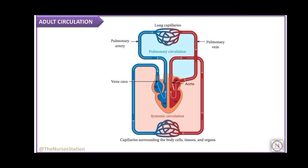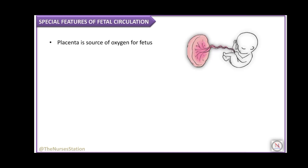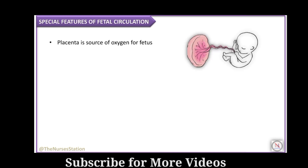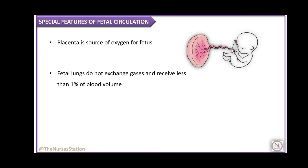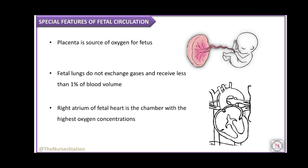There are several differences between adult and fetal circulation. The placenta is the source of oxygen for the fetus, whereas in adults the source of oxygen is the lungs. In contrast to adult lungs, fetal lungs do not exchange gases and receive less than 1% of the blood volume. In the fetal heart, the right atrium is the chamber with the highest oxygen concentration, whereas in adults it is the left atrium.